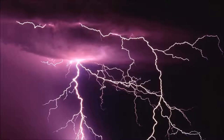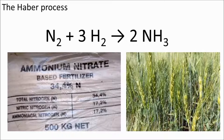The Haber process is a chemical reaction used in industry to produce huge quantities of ammonium nitrate fertilizer, which helps plants and crops grow. If it weren't for ammonium nitrate fertilizer, we wouldn't be able to feed seven billion people on this earth. However, this fertilizer is spread in huge quantities across fields, so it can cause eutrophication and other problems.